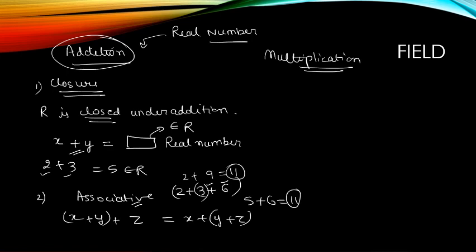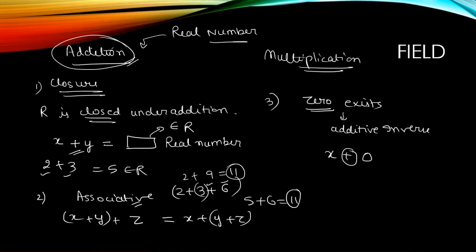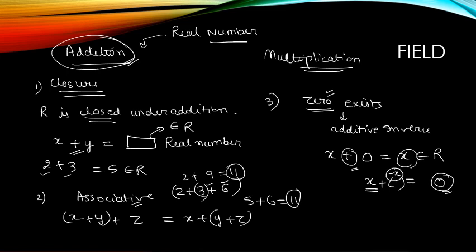Another property of addition is that there exists a zero in the operation, which acts as the additive identity. If you have a real number x and you apply the addition operation with 0, you will always get that real number x itself. Furthermore, there exists an additive inverse: for any number x, adding its negative (-x) gives 0, so x + (-x) = 0.